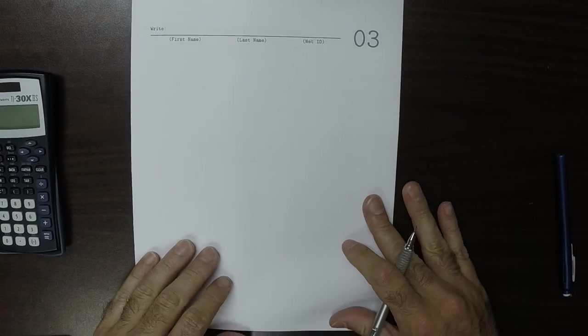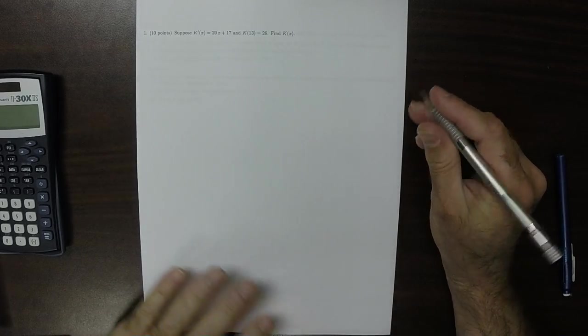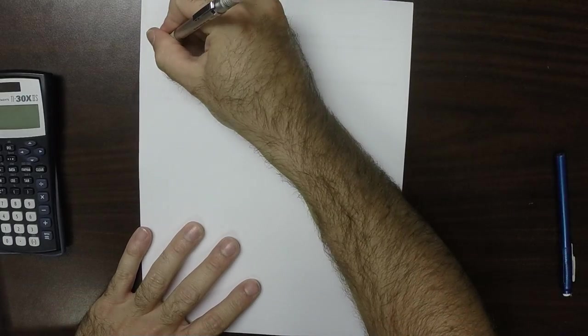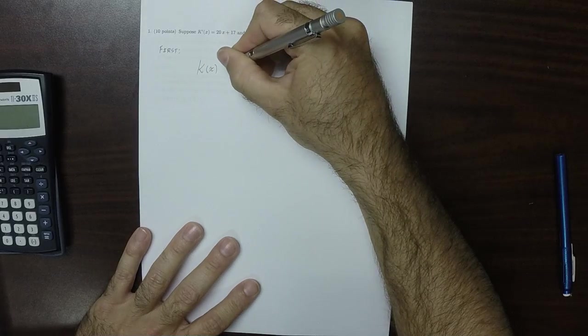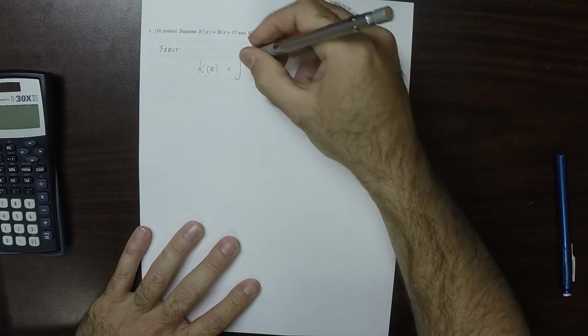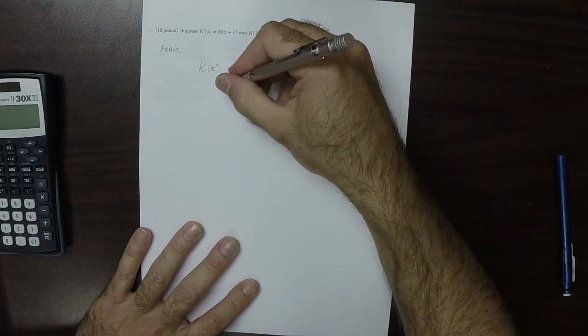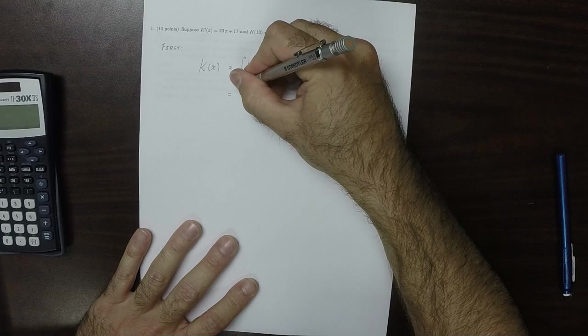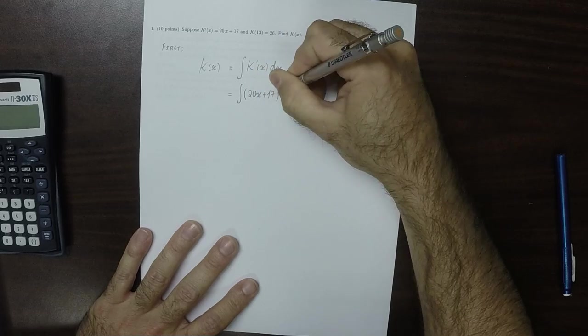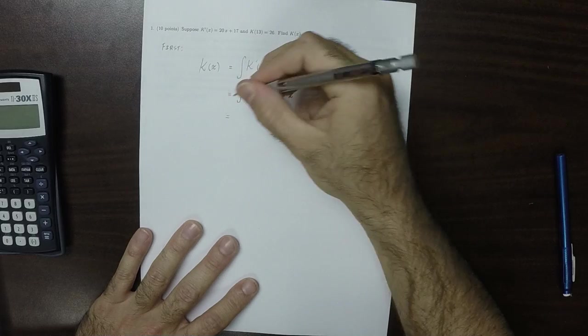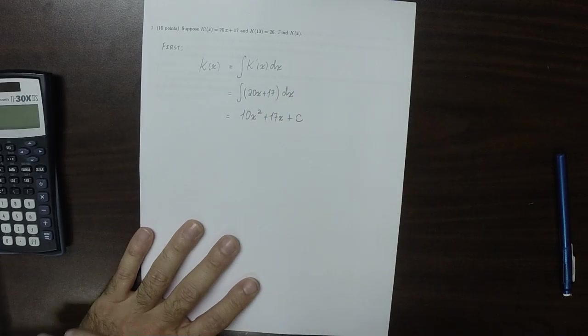This is the solution to quiz 3. In the first place, we know that k(x) should be the antiderivative of the derivative of k(x). So that tells us it should be the antiderivative of 20x plus 17. So that would be 10x² plus 17x plus some unknown constant c.